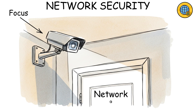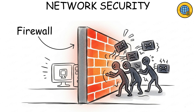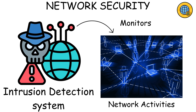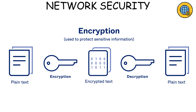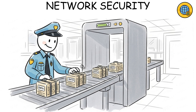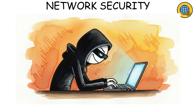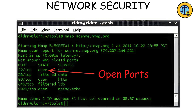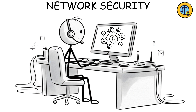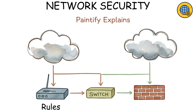Here, the focus is on controlling who gets in and who stays out. Firewalls block suspicious traffic. Intrusion detection systems monitor activity. And encryption ensures that even if data is stolen, it's unreadable. It's like airport security for your internet, scanning every data packet that passes through. Hackers often exploit open ports, weak router settings, or unpatched firmware to get in. So network admins live in a world of rules, protocols, and constant monitoring.